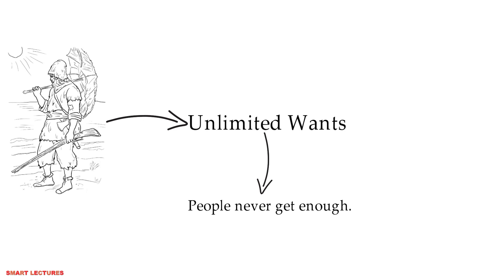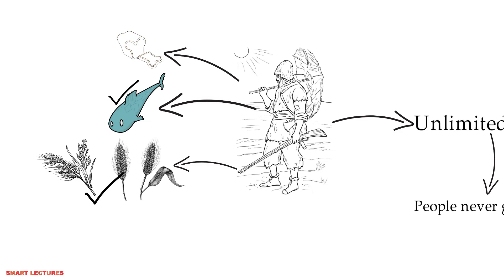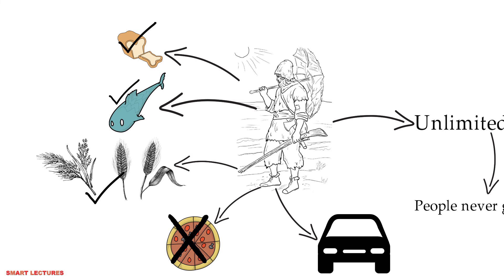Unlimited wants essentially mean that people never get enough. There is always something else that they would like to have. Like Robinson, first he wanted fish, he got it. Then he arranged rice and barley, he got it. Then he wanted bread, he got it. Now he wanted pizza, can't get it. He wanted to drive a flash car on the lonely island, he couldn't have it. So when combined with limited resources, unlimited wants result in the fundamental problem of scarcity.